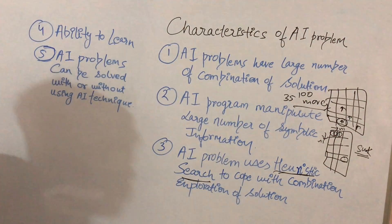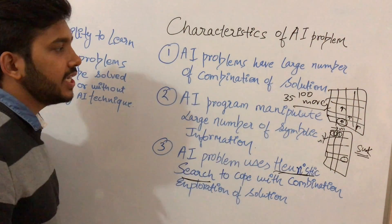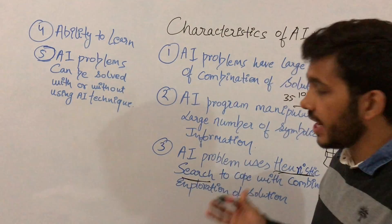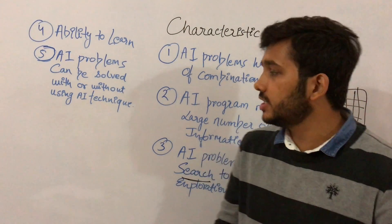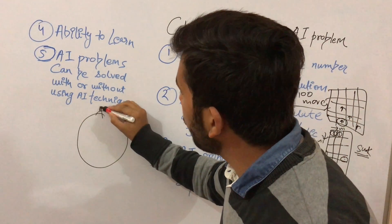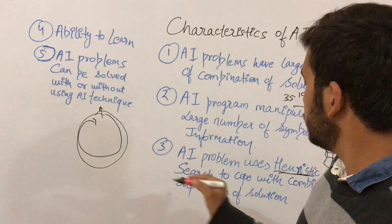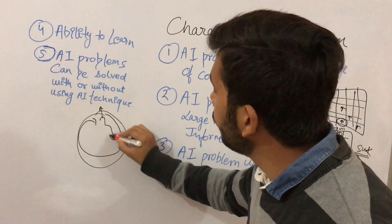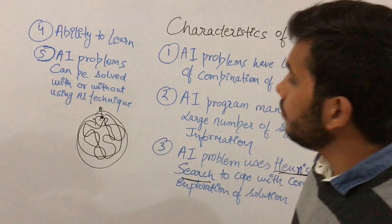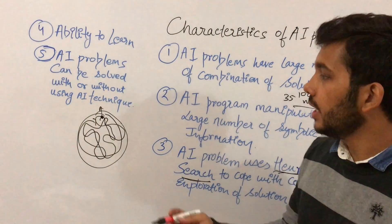The third characteristic is that AI problems use heuristic search to cope with the combination exploration of solutions. Just like in a chessboard there are 35 raised to power 100 moves — heuristic search helps with this. Suppose you want to move across a city from a starting point to an endpoint. Without heuristic search, you would move randomly — here, here, and there — which is not a proper search.